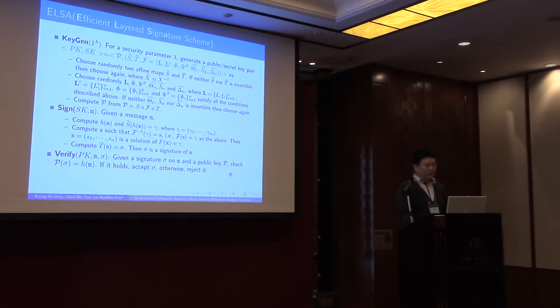Next, we propose a new MQ signature scheme named ELSA. For key generation, choose randomly two affine maps, S tilde and T tilde, until they are invertible. Here, tilde means the inverse of each map throughout this presentation. Choose randomly these maps, satisfying all the conditions described before. These maps need to be invertible.